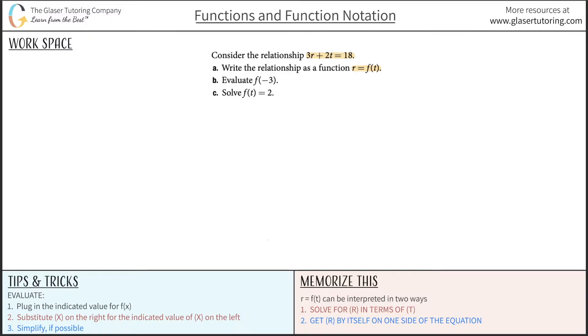So for letter a here, let's rewrite the original equation: 3r plus 2t equals 18. What they're asking us is solve this for r, get everything over to the right-hand side. So the first thing is to subtract the 2t over to the right-hand side. So this would then be 3r is equal to now 18 minus 2t.